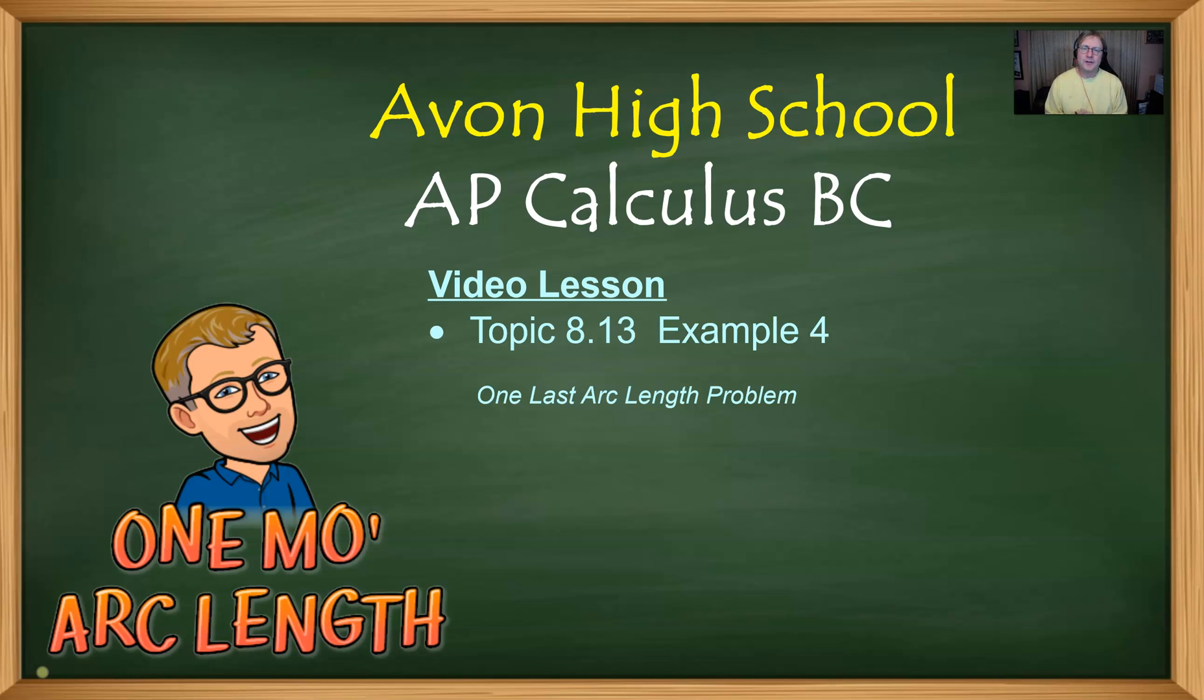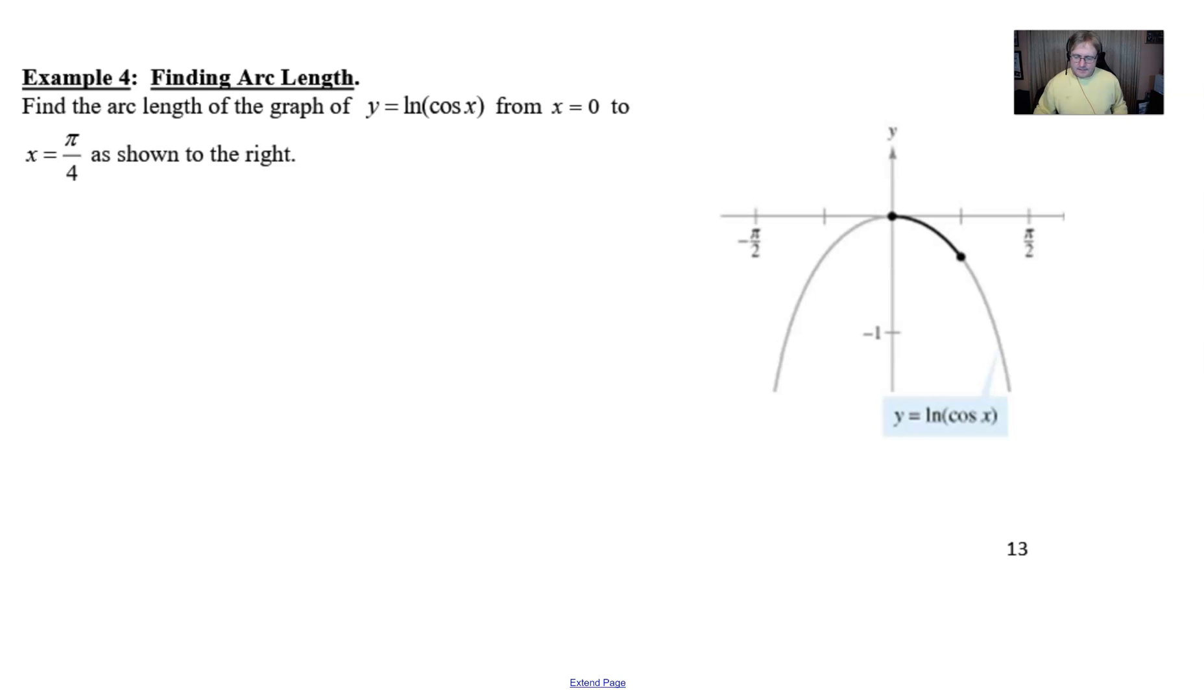We're going to look at a function that is kind of a nasty combination of things, but yet its bark is maybe a little bit worse than its bite. It's actually a pretty easy one to evaluate. So let's take a look at our example four. In this example, we are asked to find the arc length of the graph of y equals natural log of the cosine of x from 0 to pi over 4, as shown in the image to the right.